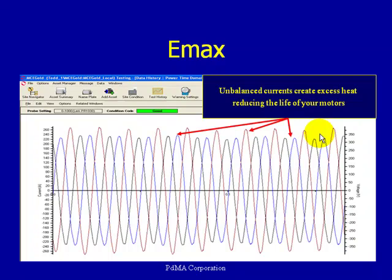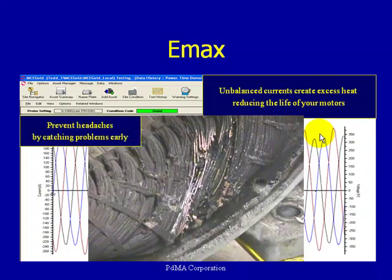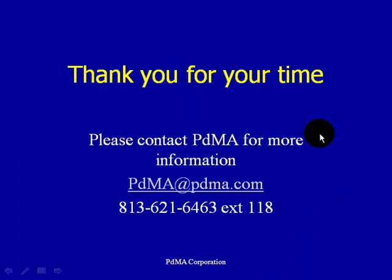Unbalanced currents create excess heat, reducing the life of your motors. Excess heat lowers insulation life and thus reduces overall motor life. Catching these problems early prevents costly failures. To recap: motors with high resistance connections — identified by high resistive imbalance on the MCE test or high current imbalance on the Emax test — are running at reduced efficiency, costing more to operate, and potentially suffering shortened insulation system life due to excess heat.